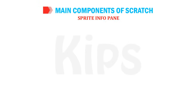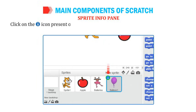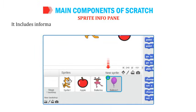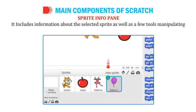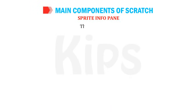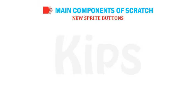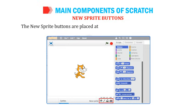Click on the icon at the top left corner of a sprite thumbnail to display the Sprite Info Pane, which includes information about the selected sprite and tools for manipulating it. The tools include Circular Arrow, Linear Arrow, and Disable Rotation.